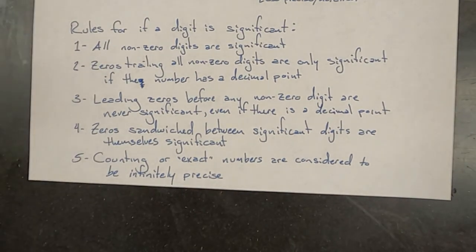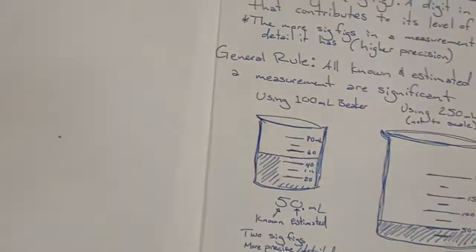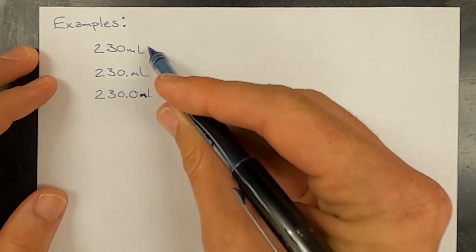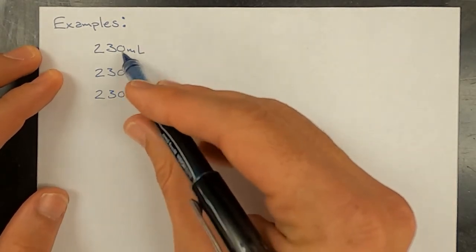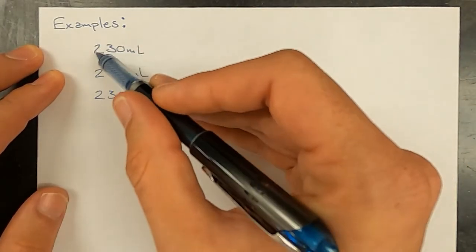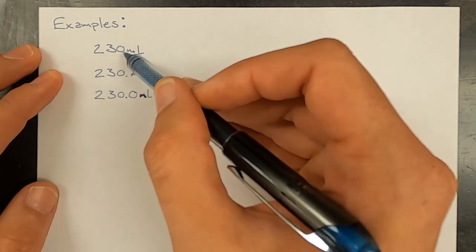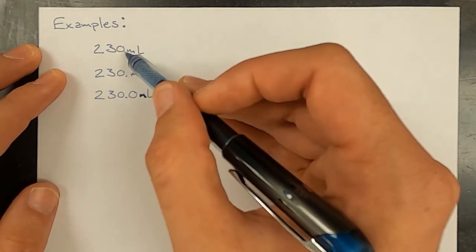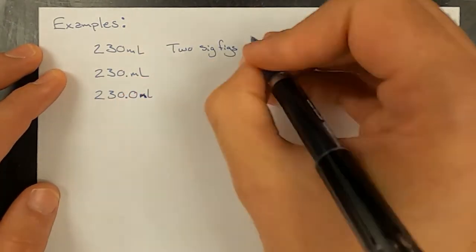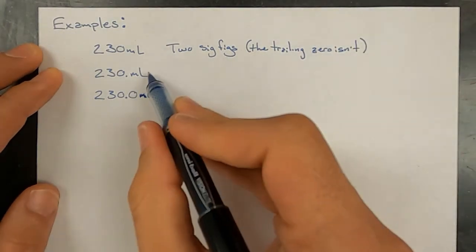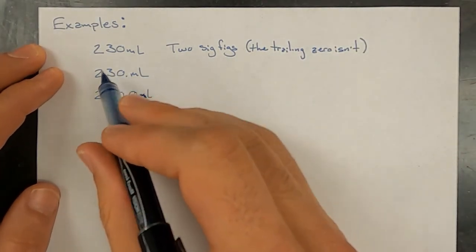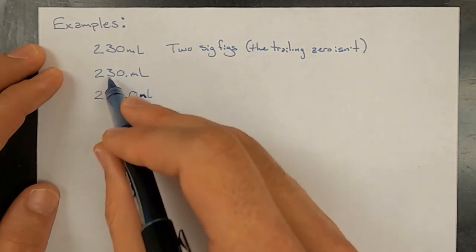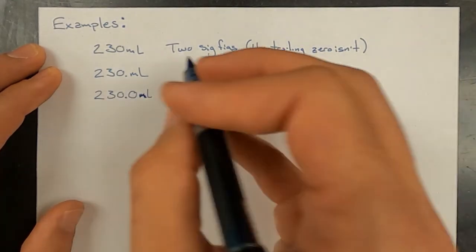Now we'll look at a few examples to see how these rules apply. In this first measurement, 230 milliliters with no decimal point after the zero, there are only two significant figures — the two and the three — because of rule one. This trailing zero means that when this was measured, the two was known, the three was estimated, and the zero was a placeholder. In the next measurement, there is a decimal point after the zero, meaning the two was known, the three was known, and the zero was the estimated digit — so this has three sig figs.